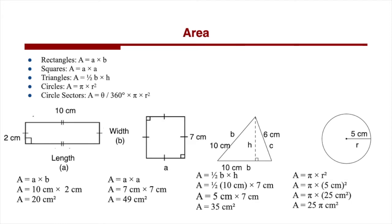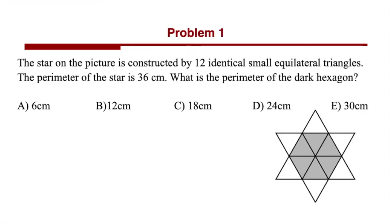Please pause the video and try the problems with us. The first question is about perimeter. The star in the picture is constructed by 12 identical small equilateral triangles. The perimeter of the star is 36 centimeters, and the question asks for the perimeter of the dark hexagon.